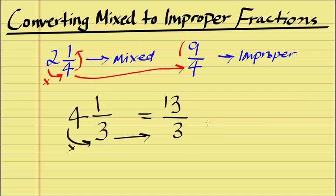Therefore 13 over 3. This is true for all mixed fractions. In the next video we're going to be learning how to convert improper fractions so 13/3 or 9/4 into mixed fractions such as this.